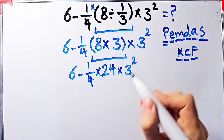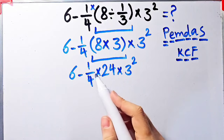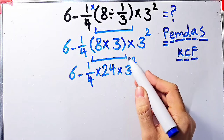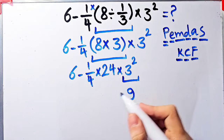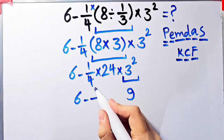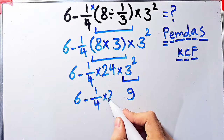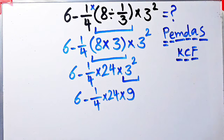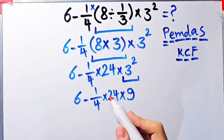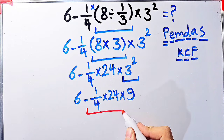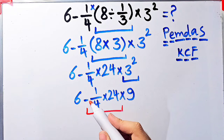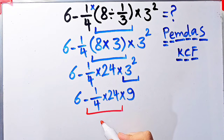Now we have six minus one over four, times twenty-four, times three to the power of two. We have subtraction, multiplication, and exponent. First we simplify this exponent: three to the power of two equals nine. Now we have six minus one over four, times twenty-four, times nine. We simplify this multiplication: negative one over four times twenty-four equals negative twenty-four over four, which equals negative six.